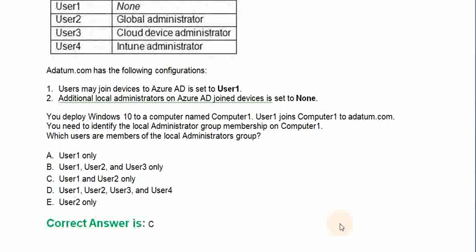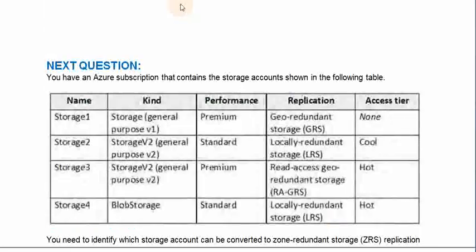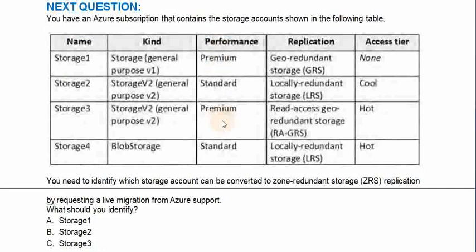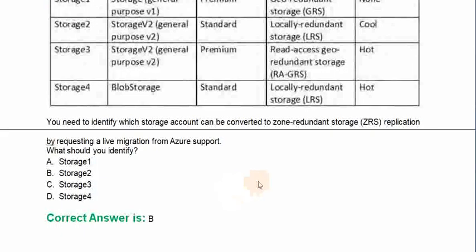The correct answer is Option C. You have an Azure subscription that contains the storage accounts shown in the following table. You need to identify which storage account can be converted to zone-redundant storage replication by requesting a live migration from Azure support. What should you identify — Storage 1, Storage 2, Storage 3, or Storage 4? The correct answer is Option B, Storage 2.